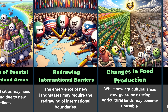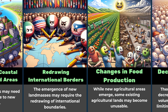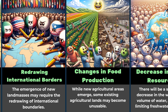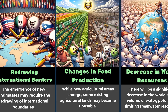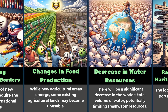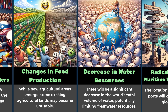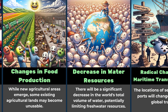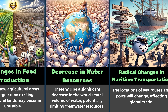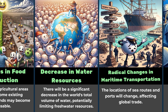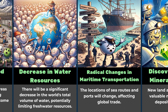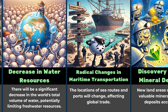While new agricultural areas emerge, some existing agricultural lands may become unusable. There will be a significant decrease in the world's total volume of water, potentially limiting freshwater resources. The locations of sea routes and ports will change, affecting global trade.